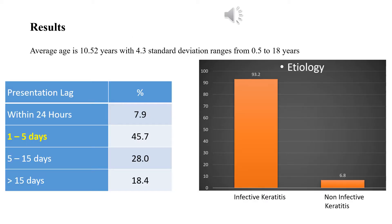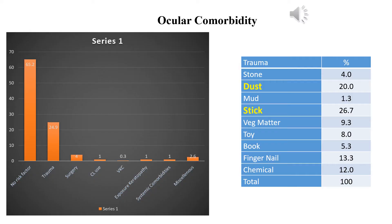Looking at the results: presentation lag, meaning the time between occurrence of symptoms and presentation to the hospital. It was found that maximum patients came between 1–5 days of occurrence of symptoms, followed by 5–15 days. Very few patients came within 24 hours. Around 33.2% of diagnosed keratitis cases were of infective etiology, and the rest were non-infectious. Majority had no associated risk factors, and trauma was found to be the most common risk factor.